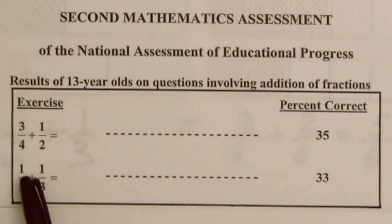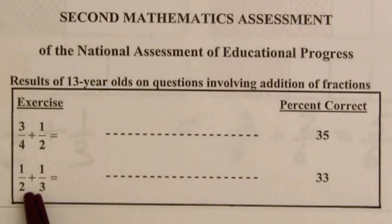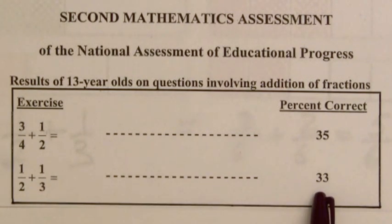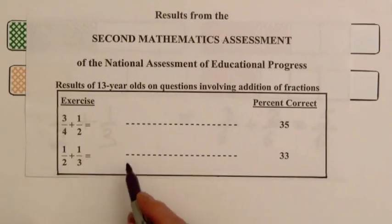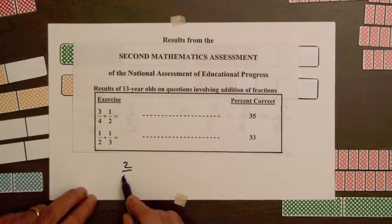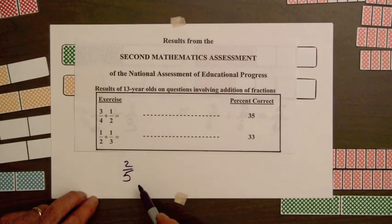Now this question, 1/2 plus 1/3, is given every four years on the national assessment test so they can check these from one period to another. And almost very consistently, one-third of the students will get this correct. And one-third will write the incorrect answer of 2/5, which is obtained by just adding the numerators and adding the denominators.